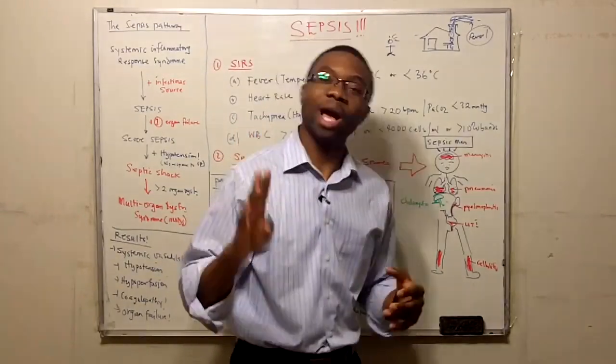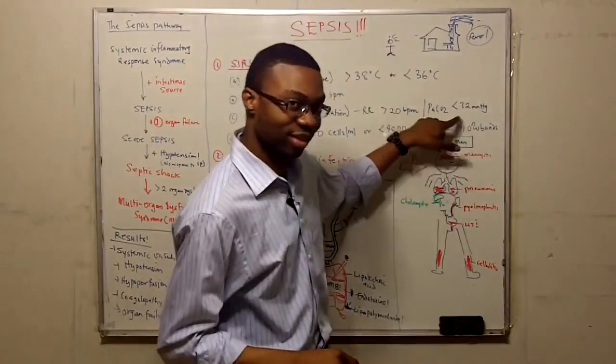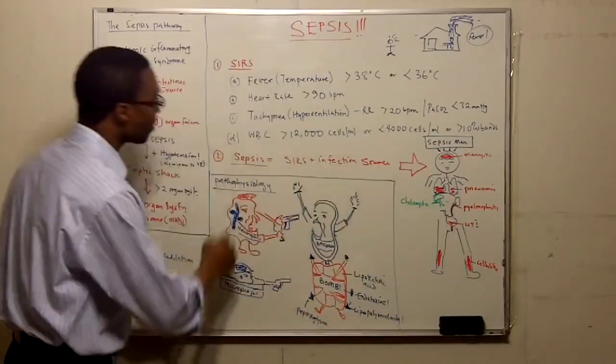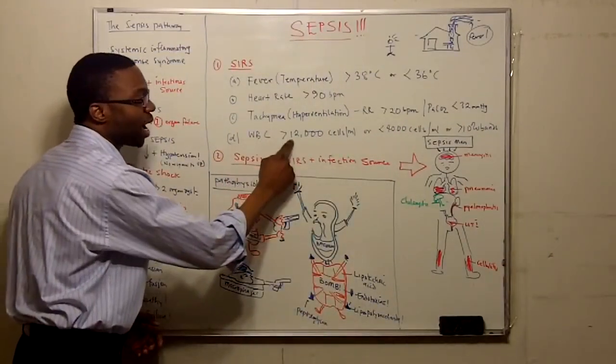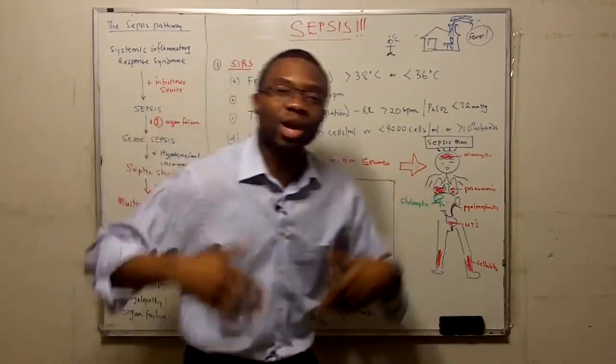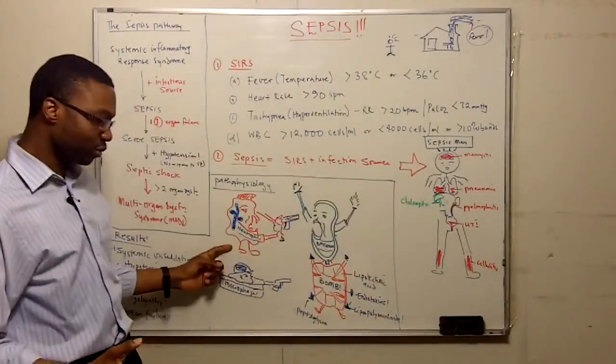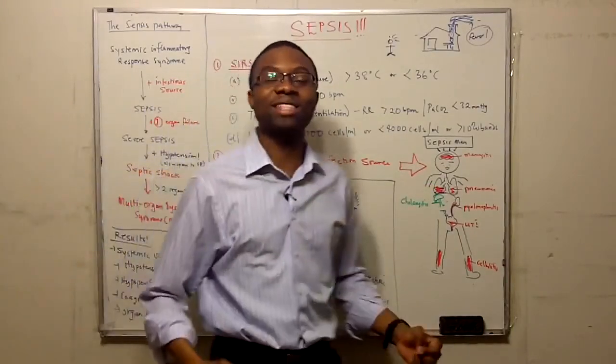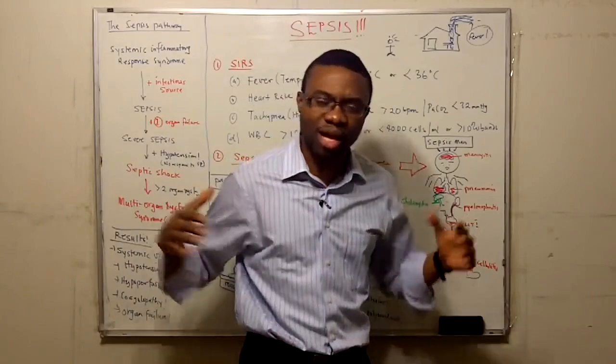You have to be tachypneic. That explains why your PaCO2 is less than 32. Because that's the only way you can get rid of the CO2. Normal CO2 is 40. When you hyperventilate, you're going to blow out most of the CO2, and it's going to be low.